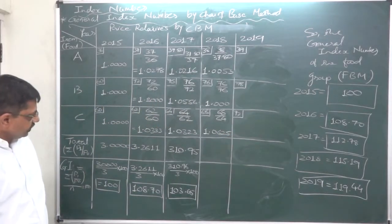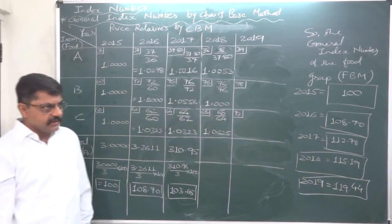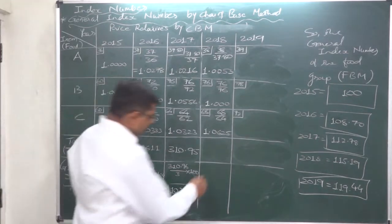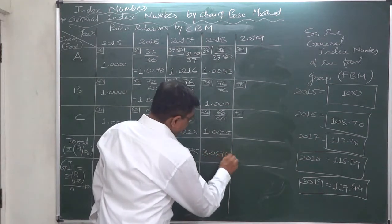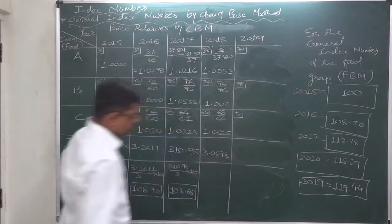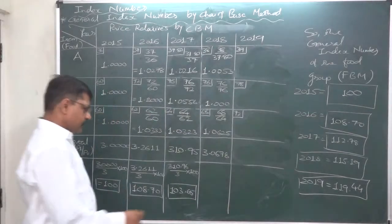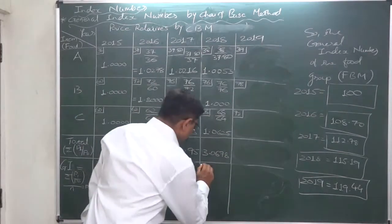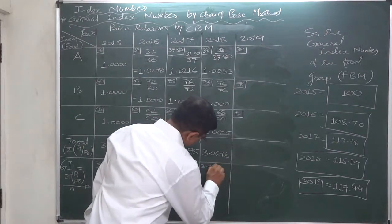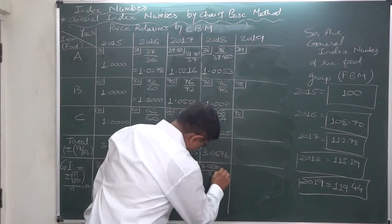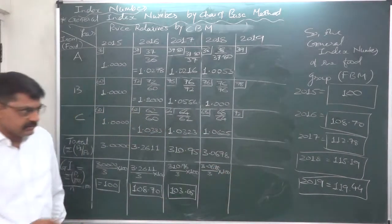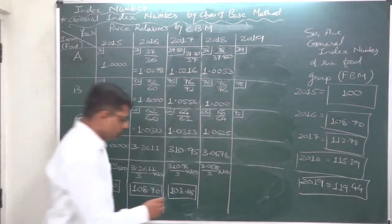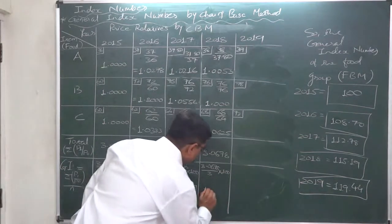The summation of price relatives for all three items A, B, and C is 3.0678. The general price index will be 3.0678 divided by 3 (number of items), multiplied by 100 to get the percentage, and it comes to 102.26.